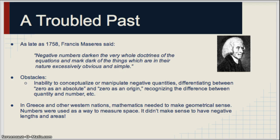Some of the obstacles that were faced in trying to accept negative numbers were that people had a difficult time differentiating between zero as an absolute, meaning it was absolutely the smallest number, you couldn't go anywhere below that, and zero as an origin, meaning zero as a place to start to go in either direction.